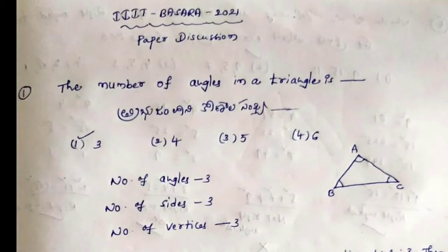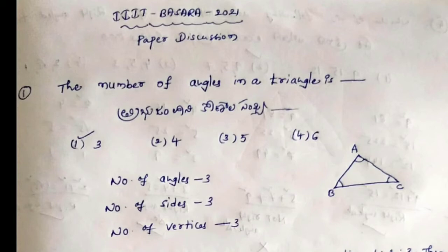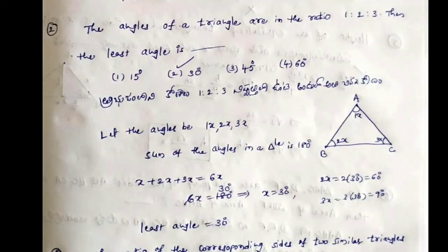The number of angles in this triangle is dash. The triangle has angle A, angle B, and angle C. The triangle has 3 angles. So the number of angles in this triangle is 3, and the angles are numbered 1 to 3.